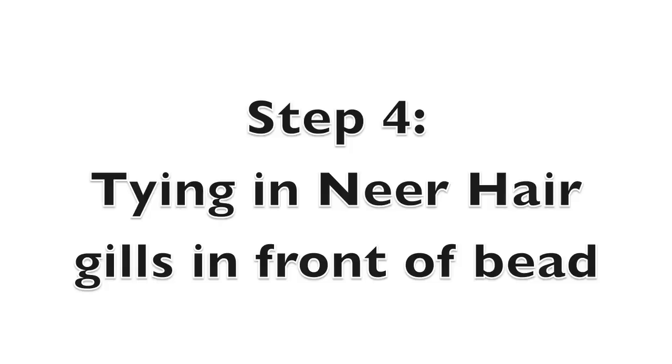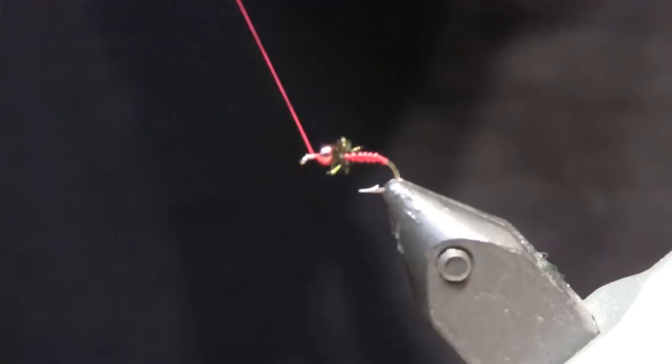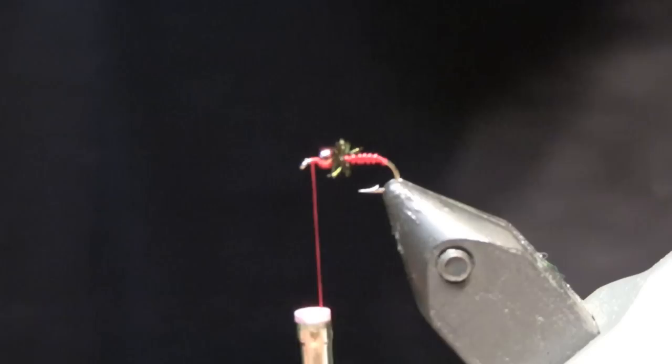For the gills on the Rojo Midge, wrap your thread ahead of the bead and cover the rest of the hook shank with one wrap just so there's no metal exposed.